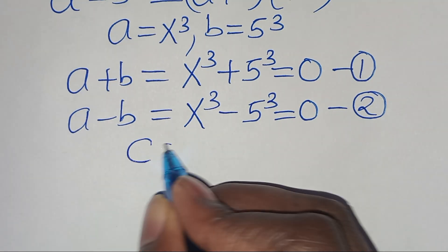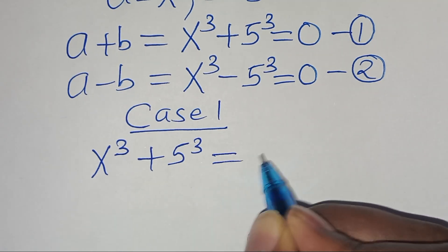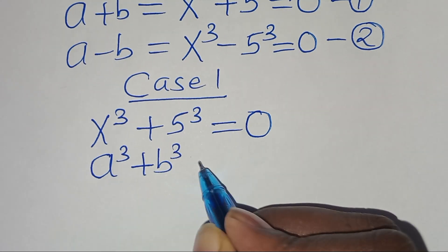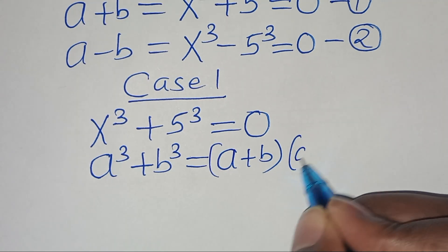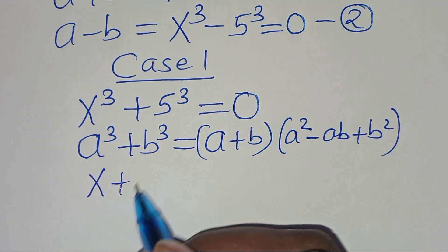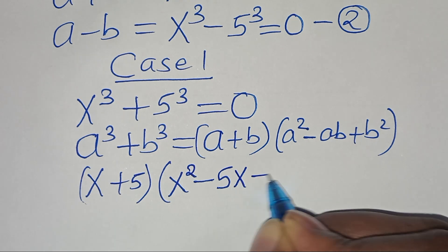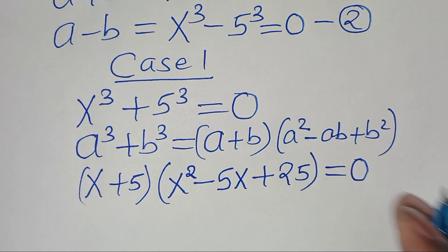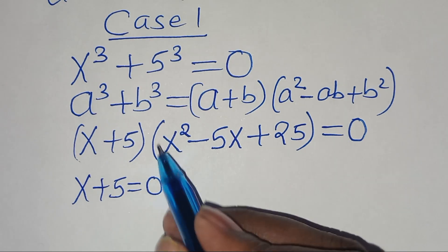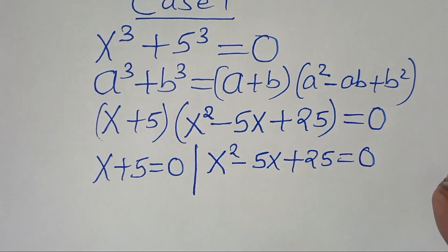Let's solve equation 1, case 1. We have x to the power of 3 plus 5 to the power of 3 equal to 0. This is in the form of a cubed plus b cubed, which can be expressed as a plus b, then a squared minus ab plus b squared. Applying this identity, we get x plus 5, then in brackets x squared minus 5x plus 25, equal to 0. The first part is x plus 5 equal to 0.